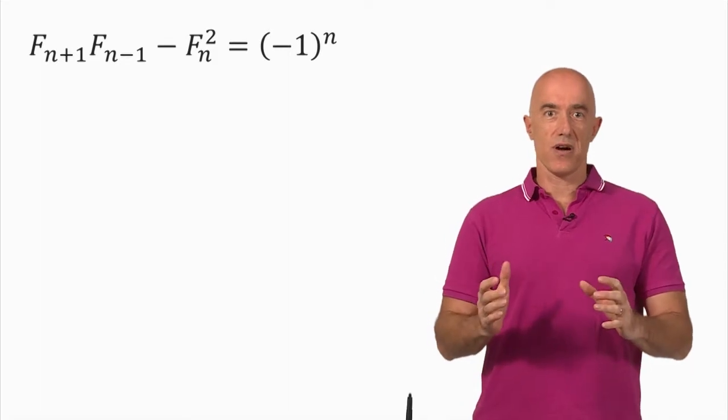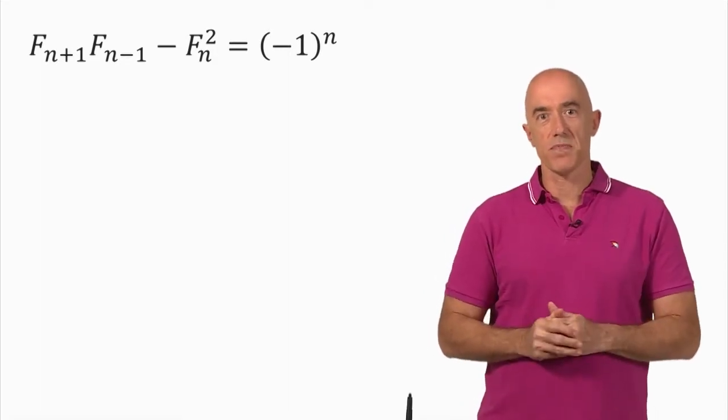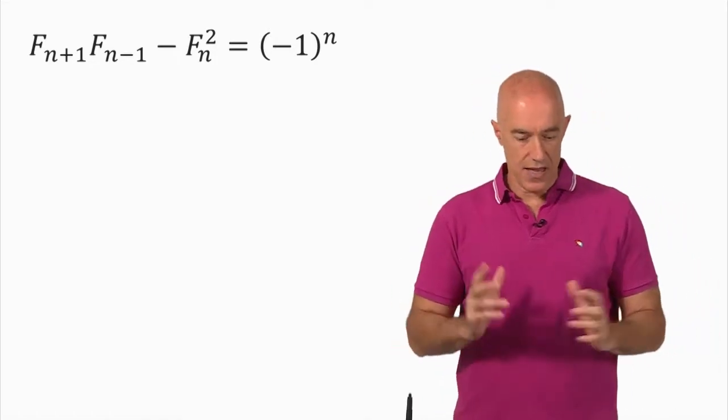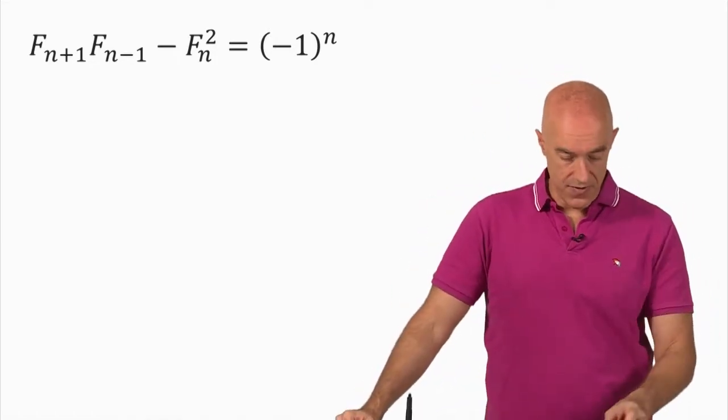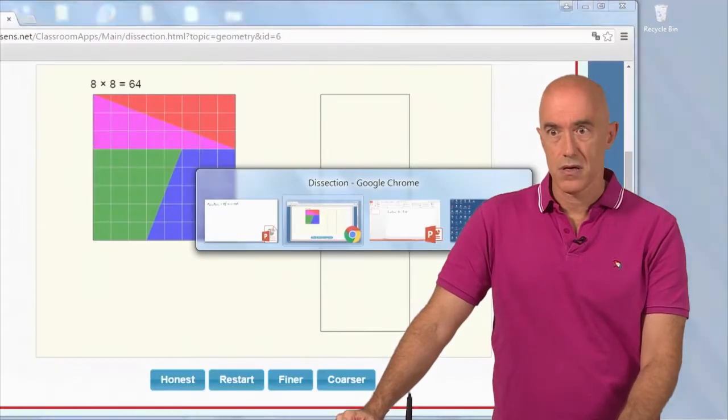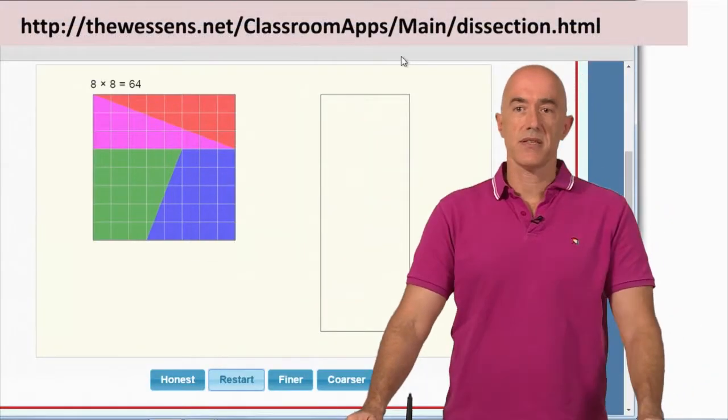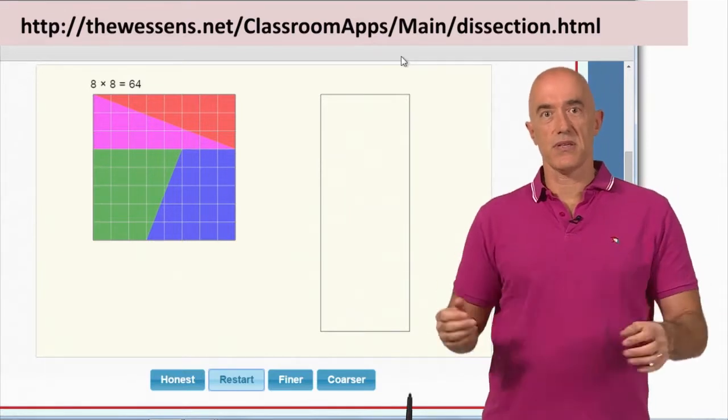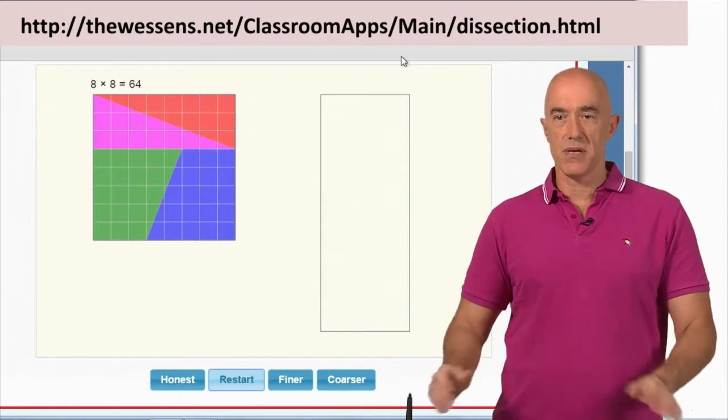is to go to a beautiful website built by Ken Wesson that everybody can access. So here's his website. What it lets us do is show you the Fibonacci bamboozlement.